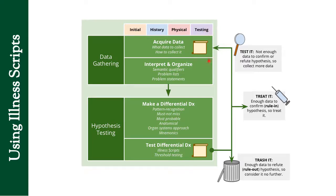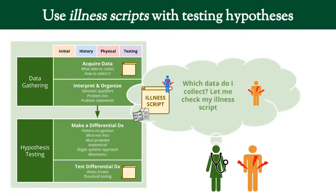You're going to apply the illness scripts in really two areas in this framework. The first one is here in acquiring data — how do you know which data to collect? There was data that we collected all the time, and there was data we collected specific to a disease. The way you know which data to collect is through the illness script.